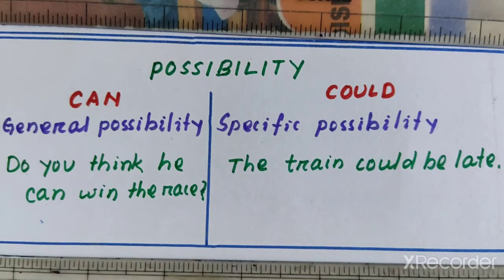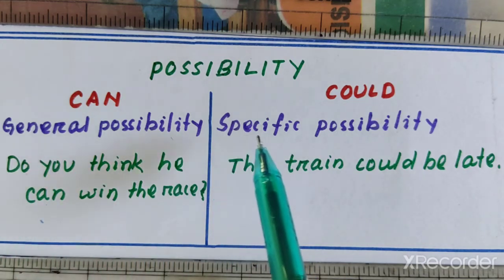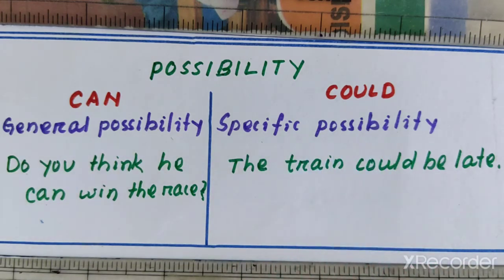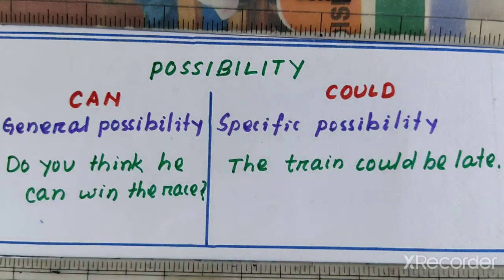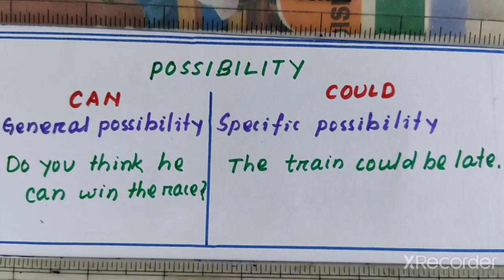Can is used for showing general possibility, while could is used for showing specific possibility. For example: 'Do you think he can win the race?' Here, we are talking about the general possibility of him winning the race, so can is used. Now let's look into another example where could is used: 'The train could be late.'